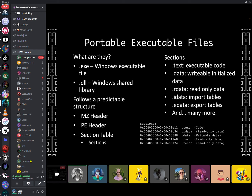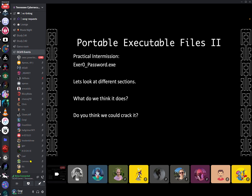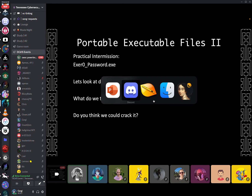Looking at the memory references, you can see sections begin and end at specific memory addresses. A section like .text might start at hex 401000 and go to 401E11, and the next one starts at 402000 — so there's always padding between sections. There are also differences between what an executable looks like on your hard drive versus when it's loaded into memory, because there's information in there about how to load it.